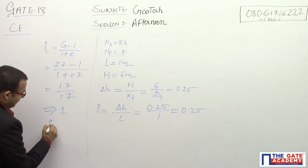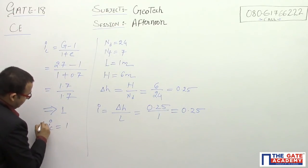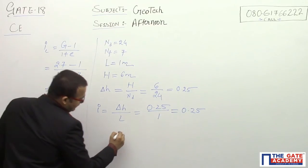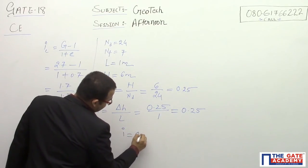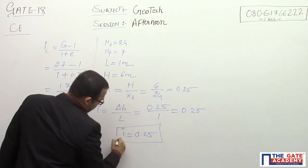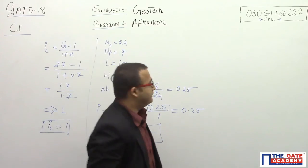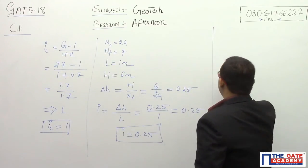Here, critical hydraulic gradient Ic equals 1. Here, actual hydraulic gradient equals 0.25. I want to calculate factor of safety and the value of factor of safety I can put here